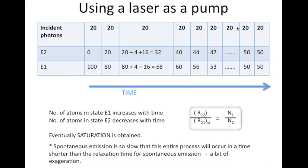At this stage, the next batch of 20 photons gives rise to 10 absorption events and 10 stimulated emission events. Since each stimulated emission gives two photons, 20 photons emerge from the lasing medium. The number of atoms in the two states will not change any further, and the amount of light coming in becomes equal to the amount leaving. The system is now behaving as a transparent material, and this condition is known as saturation.